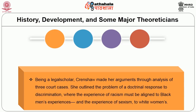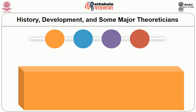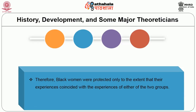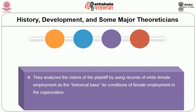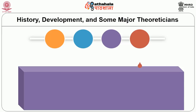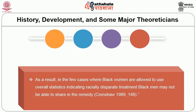Being a legal scholar, Crenshaw made her arguments through an analysis of three court cases. She outlined the problem of a doctrine in response to discrimination where the experience of racism must be aligned to black men's experience and the experience of sexism to white women's. Therefore, black women were protected only to the extent that their experiences coincided with the experiences of either of those two groups. They analyzed the claims of the plaintiff by using records of white female employment as a historical base for the condition of female employment in the organization.